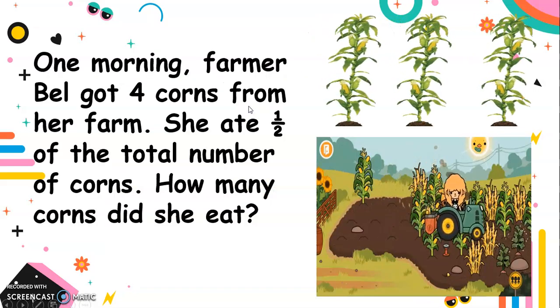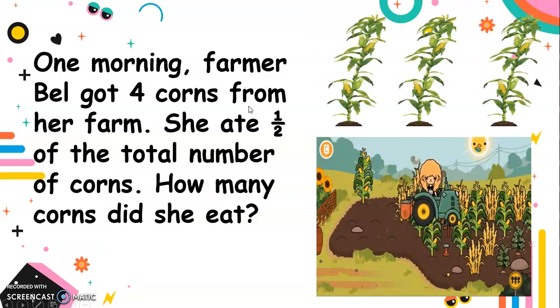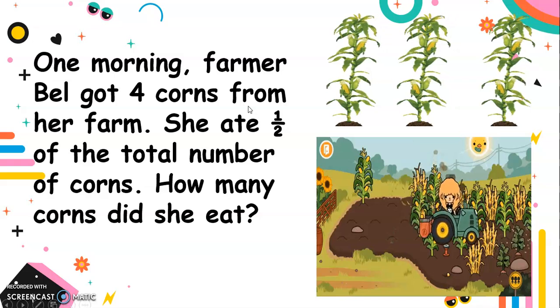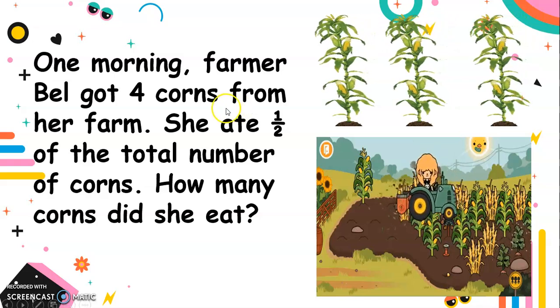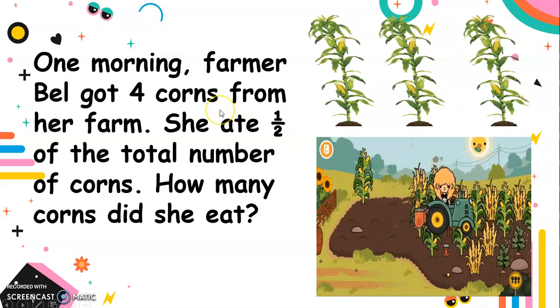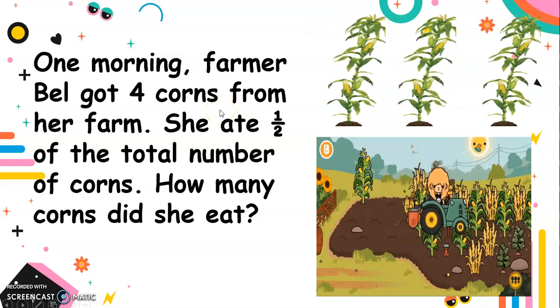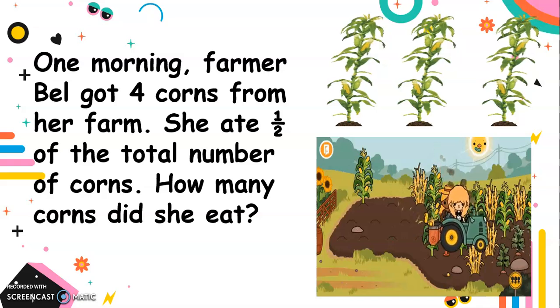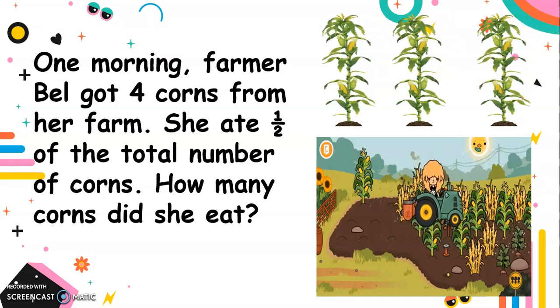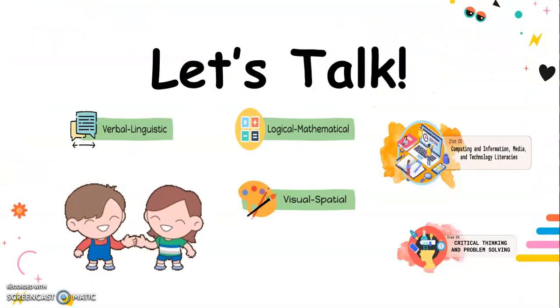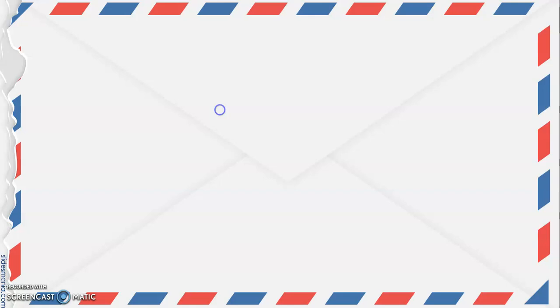One morning, Farmer Bell got four corns from her farm. She ate one half of the total number of corns. How many corns did she eat? So now that's what we're going to talk about.